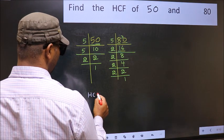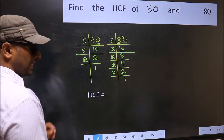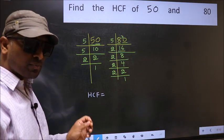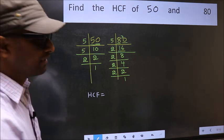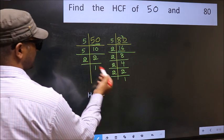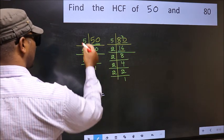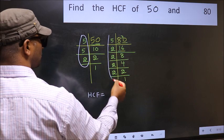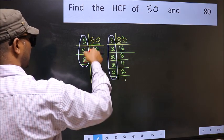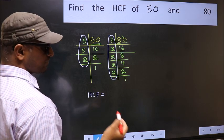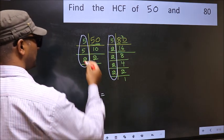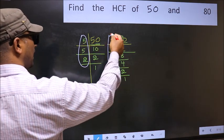Therefore, our HCF is the product of the numbers which should be present in these two places. That is here and also here. Here and here. So now let us find the numbers which should be present here and here.